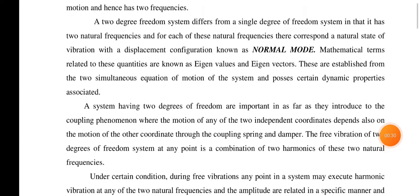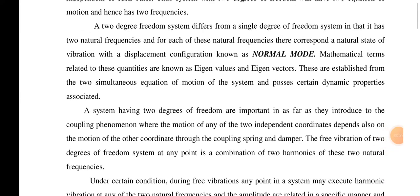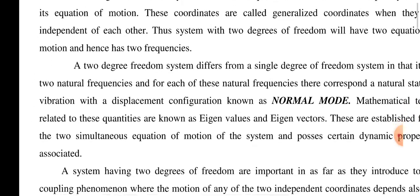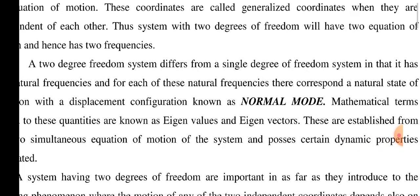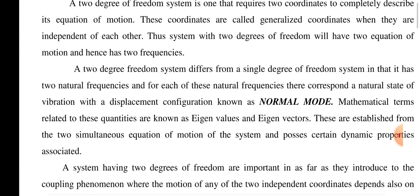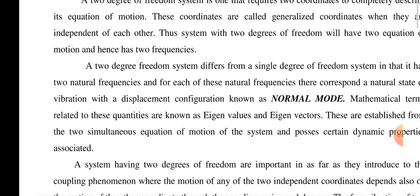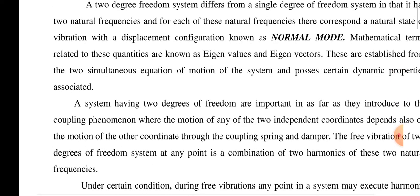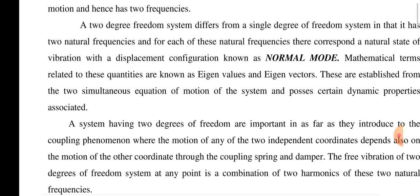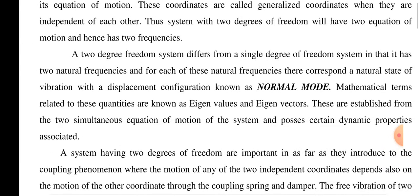Let's see the two degree of freedom systems. Unlike the single degree of freedom system, the two degree of freedom system has two natural frequencies, each having a different natural frequency and a corresponding natural state of vibration with a displacement configuration — that is called the normal mode. For each natural frequency, the corresponding natural state of vibration with the displacement configuration is known as the principal mode. In mathematical terms, the related quantities are known as eigenvalues and eigenvectors.